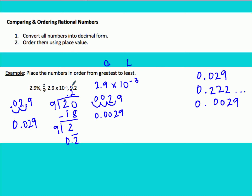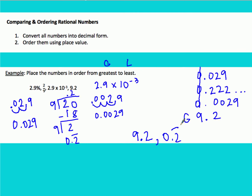The last number is 9.2, already in decimal form. Looking in the ones column, we have 0, 0, 0, and 9 — so 9.2 is clearly our greatest number. For the rest, the tenths place shows 0, 2, and 0, so 0.222... is next. Comparing 0.029 and 0.0029: both have 0 in the tenths, but the hundredths show 2 versus 0, so 0.029 is third and 0.0029 is lowest.